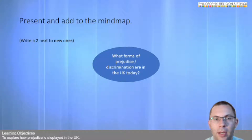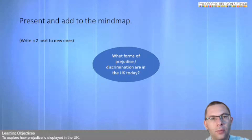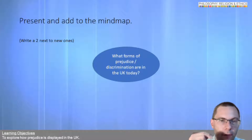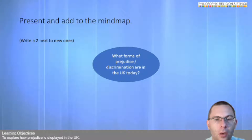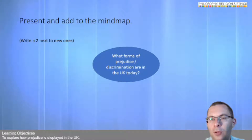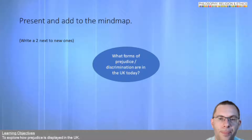The next thing we're going to do is look at some case studies to work out again what forms of prejudice and discrimination occur in the world today. In the Google Drive link below, you'll find a file called 'Case Studies'. Have a quick read over them and add some more notes around your mind map — this time with the number two next to them. What forms of prejudice and discrimination do you come across in these case studies? Put a number two next to them, then pause me and come back in a few minutes.